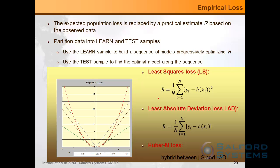Here is an example of classical regression loss functions. Least squares loss is simply the sum of squared differences between what you observe and what you predict, averaged over observations — these are empirical losses. LAD loss is the same but takes the absolute value instead of squaring. And Hubert M loss is a hybrid between LS and LAD — it uses least squares for small deviations and then automatically flips to linear loss for large deviations.